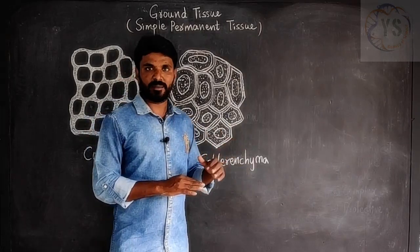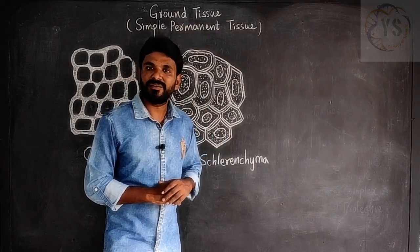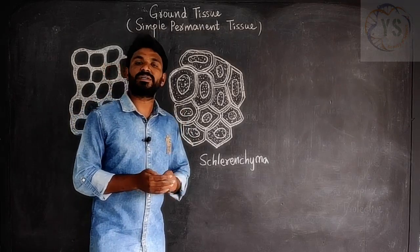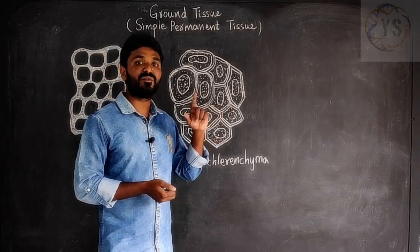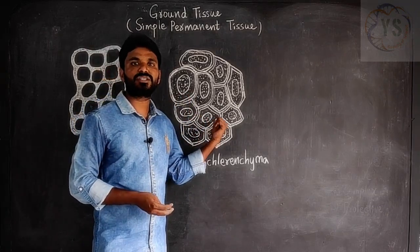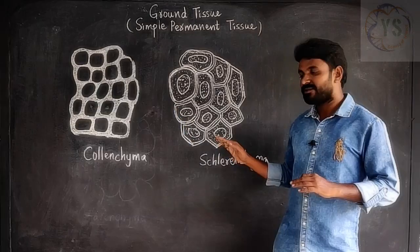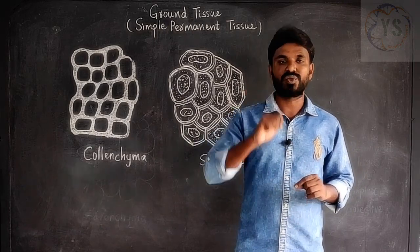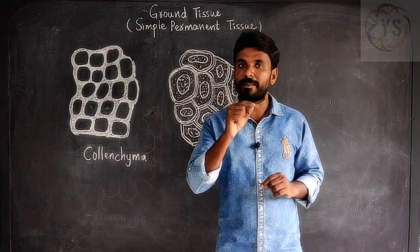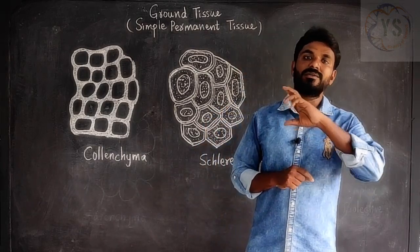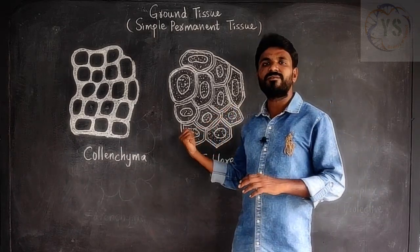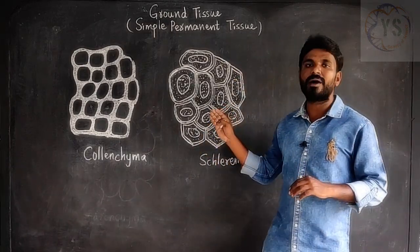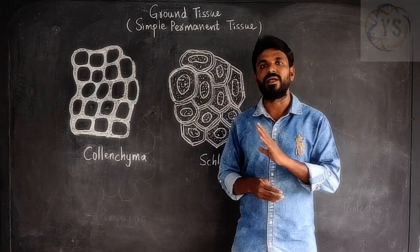Now, sclerenchyma — the cells of sclerenchyma are dead and not alive. The shape and sizes of the cells are different, and they have very thick cell walls due to the presence of lignin. There are no intercellular spaces present. Sclerenchyma is located in the coverings of seeds and around the vascular tissue. Vascular tissue means xylem and phloem, which are involved in transportation of water and food material. Due to the presence of sclerenchyma around the xylem and phloem, they get physical and mechanical support.